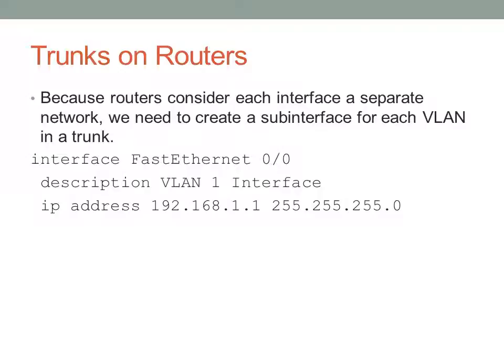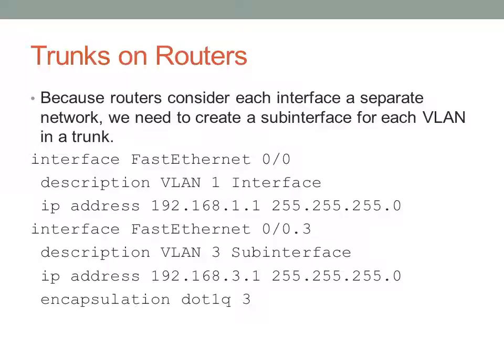I've given an example of that here. You'll want to configure the overall interface - in this case we're using FastEthernet0/0 - as whatever your native VLAN is. By default on Cisco Systems, the native VLAN is VLAN1, the untagged VLAN is VLAN1, and so you're going to use FastEthernet0/0 for your untagged traffic. I've given an IP address of 192.168.1.1 with the slash 24 subnet mask. And if we wanted to also pass VLAN3 over that interface, I've given a description so you can see exactly what this is, and you'll notice it's in a different network altogether.